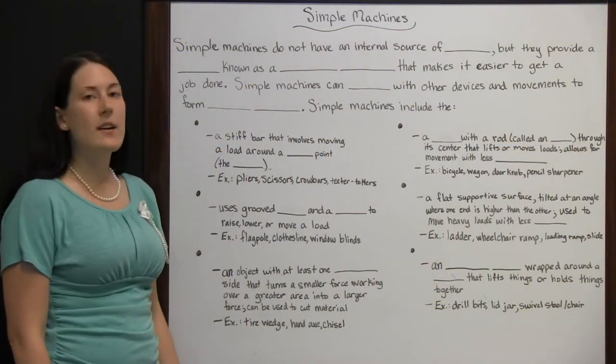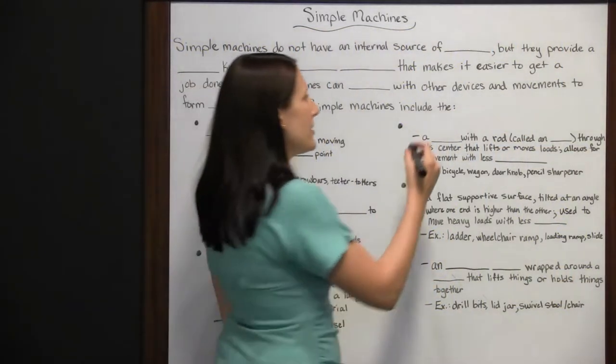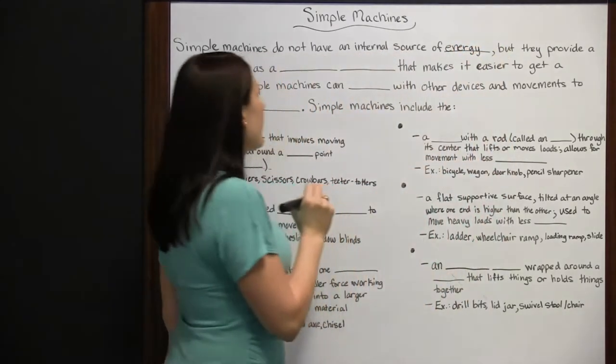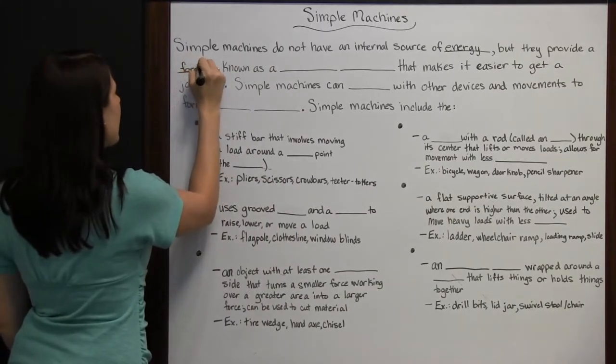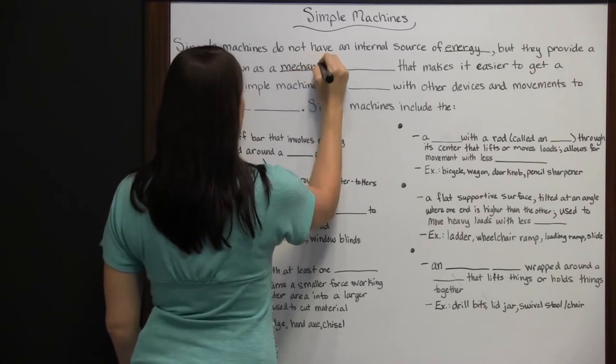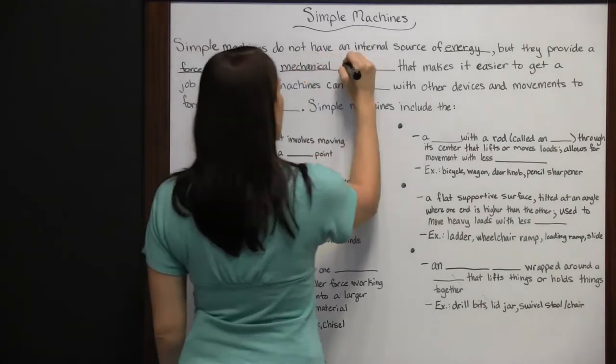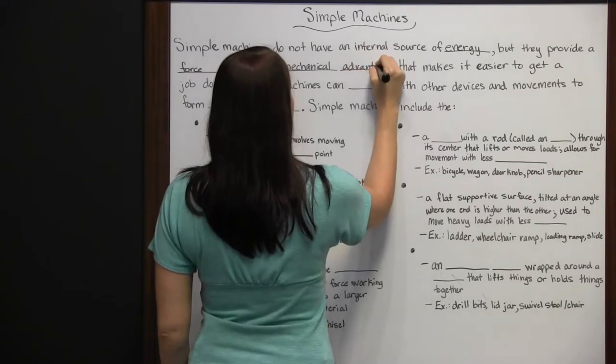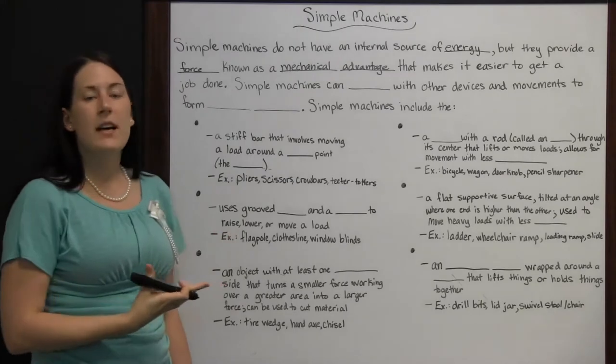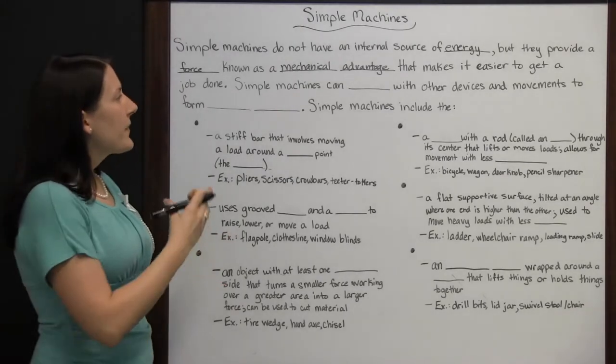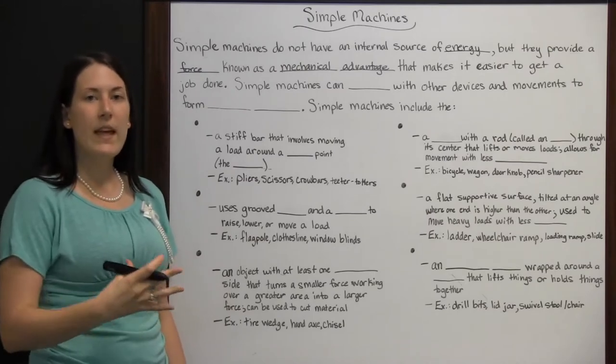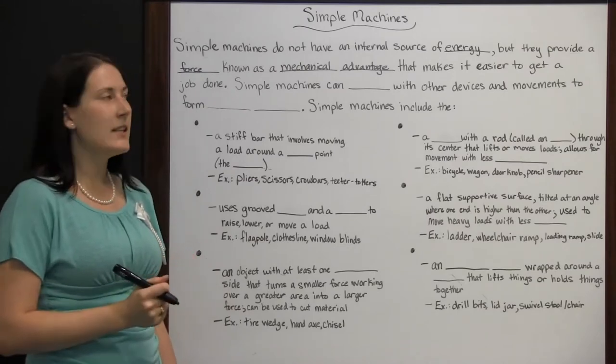Simple machines do not have an internal source of energy, but they provide a force known as a mechanical advantage. This mechanical advantage allows you to get a job done more easily. While they don't provide any energy on their own, once you provide some energy, they help provide a force that makes the job easier to get done.